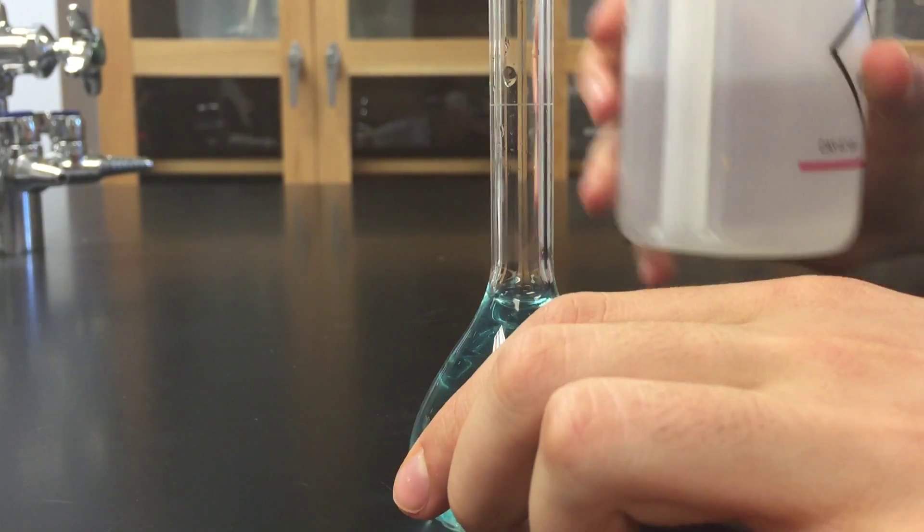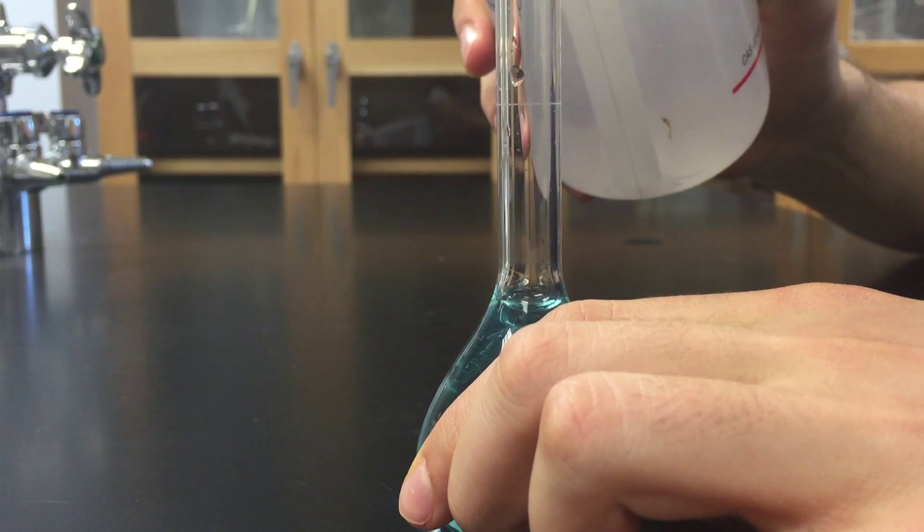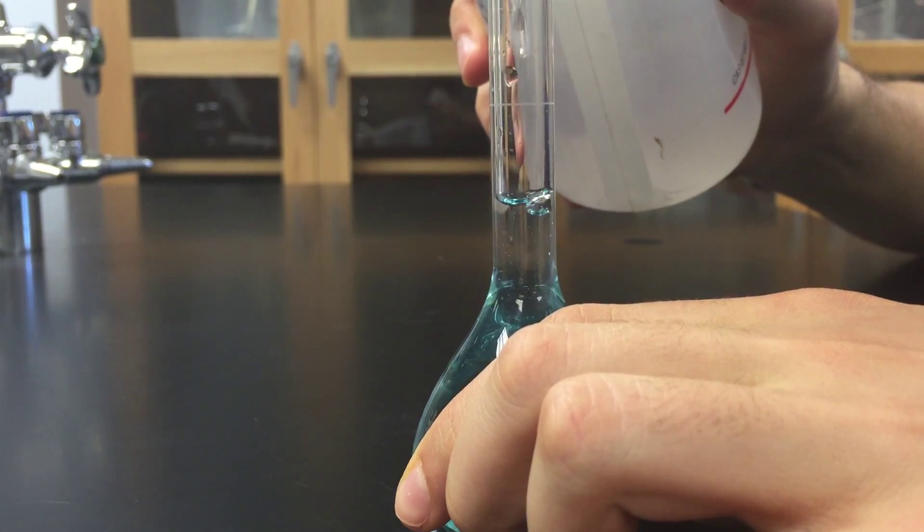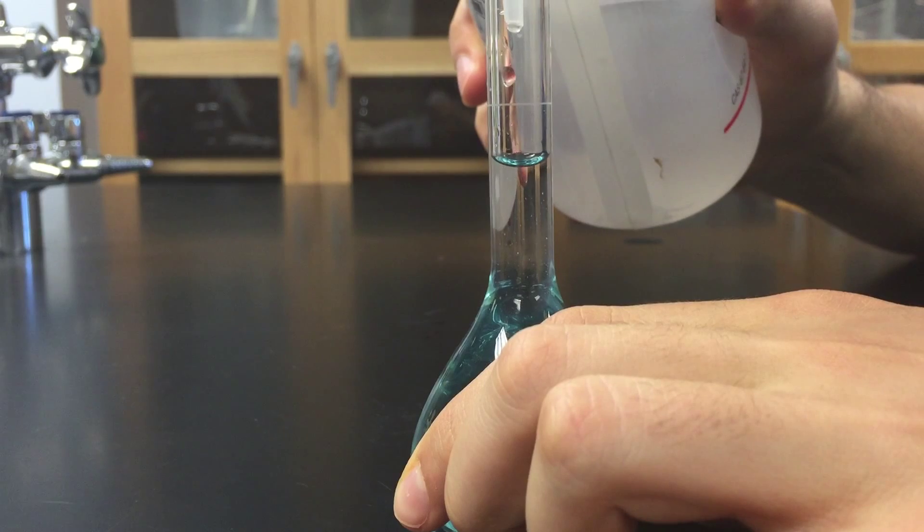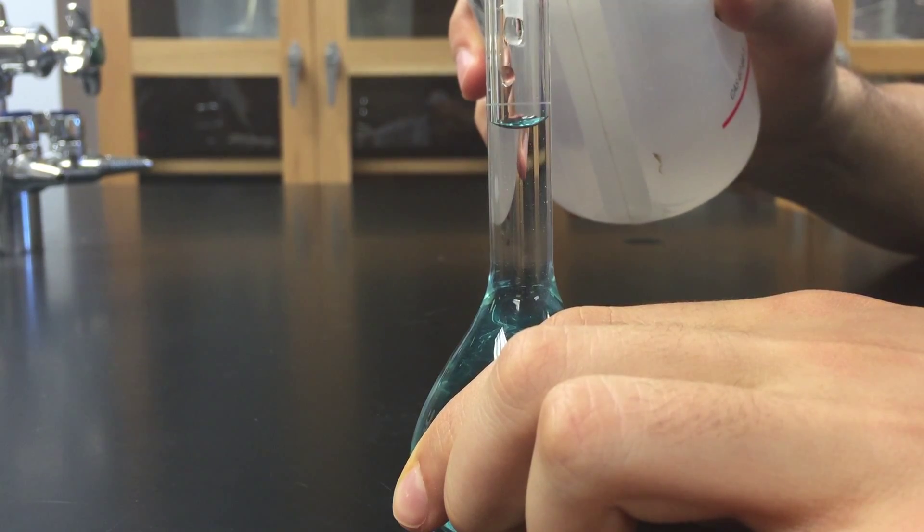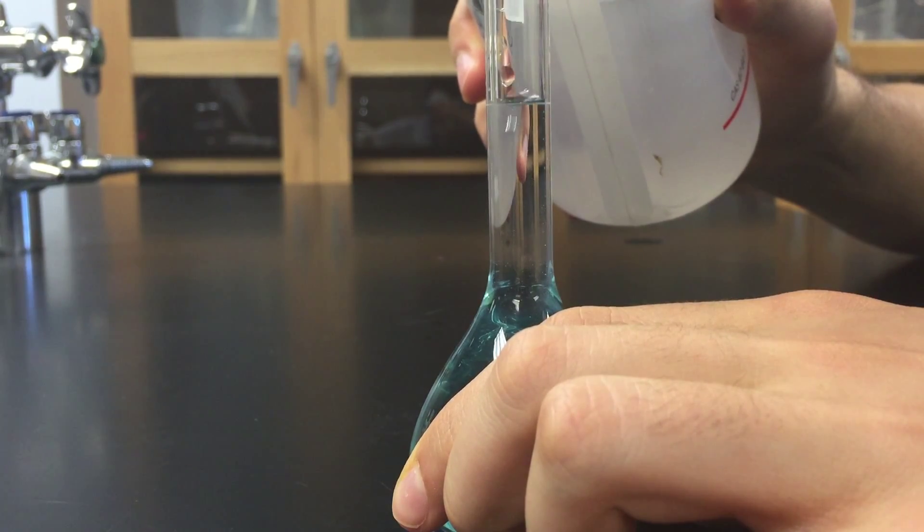The most important part is filling up the volumetric flask to the etched line. This line is very precise, and you want to make sure that the bottom of the meniscus is exactly at the etched line, just as shown.